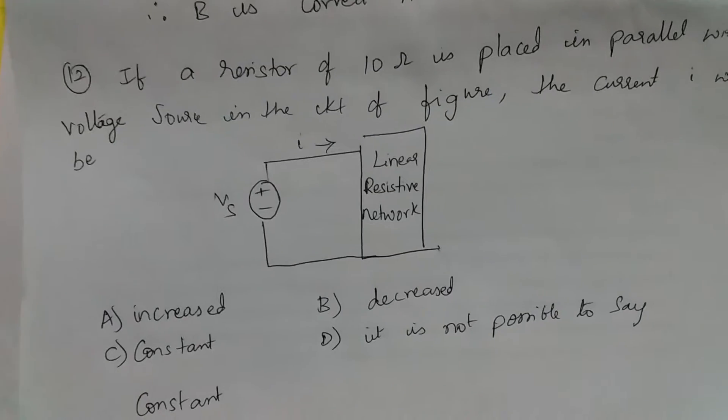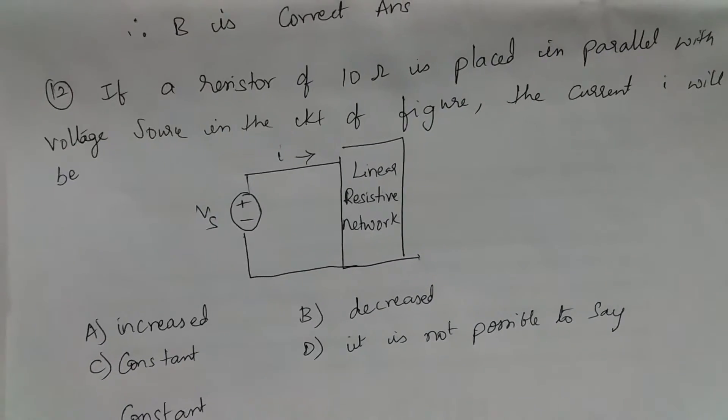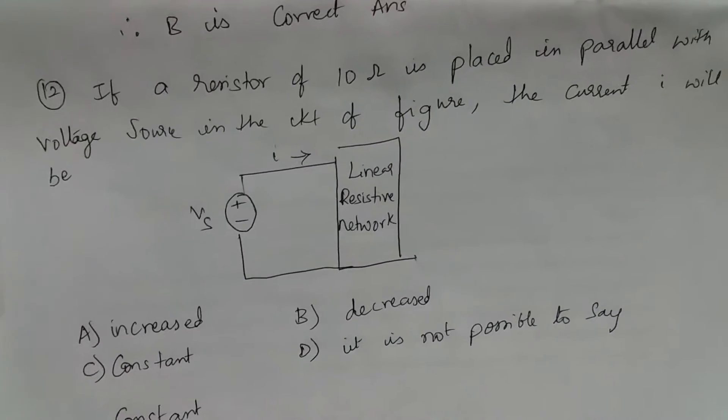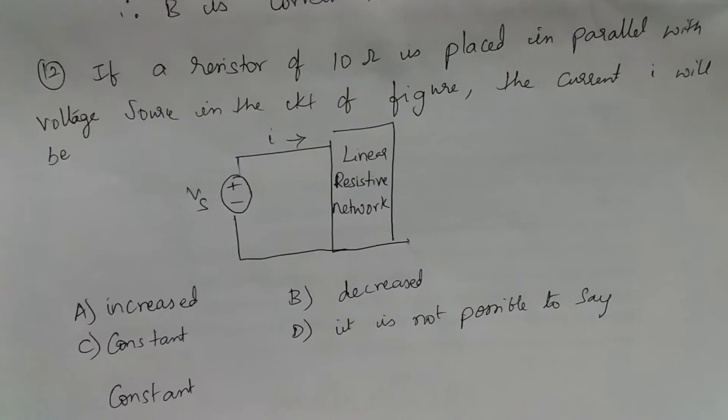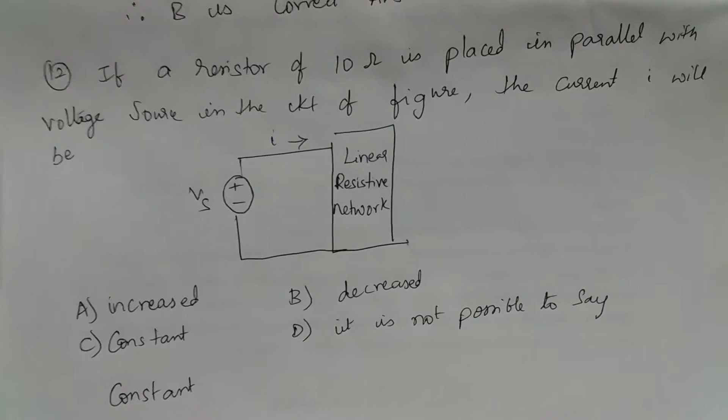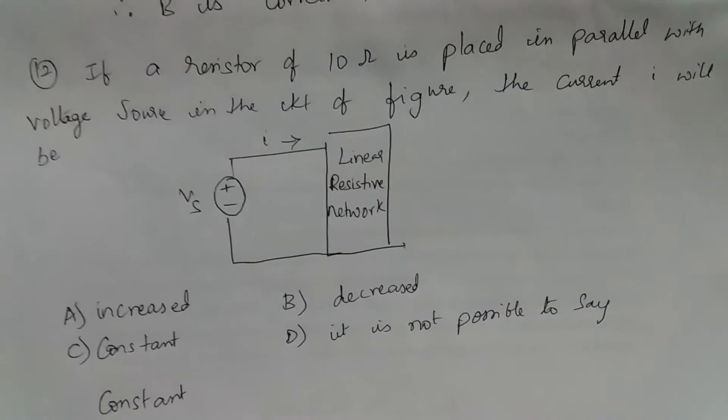If a resistor of 10 ohms is placed in parallel with the voltage source in the circuit of figure, the current I will be constant - there won't be any change because V is still the same. So the right answer is C.